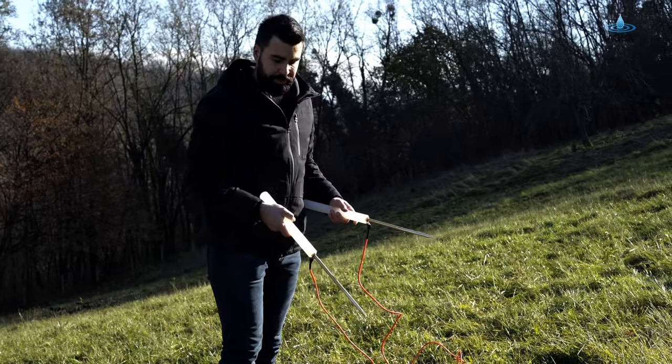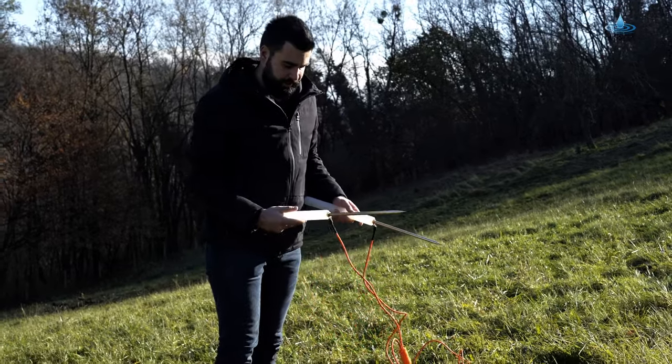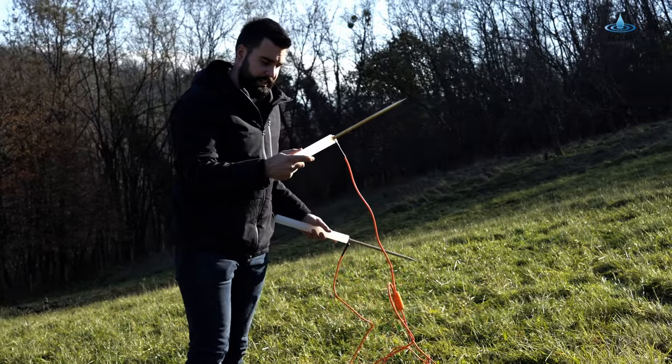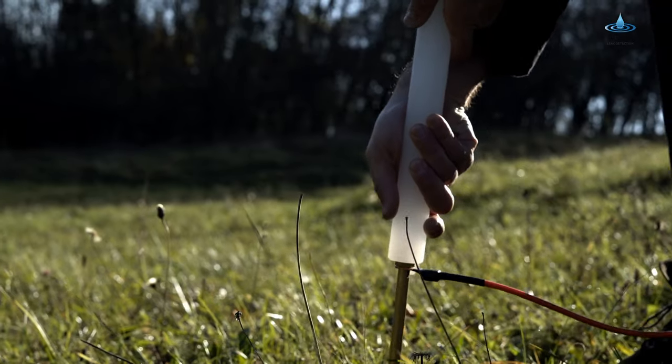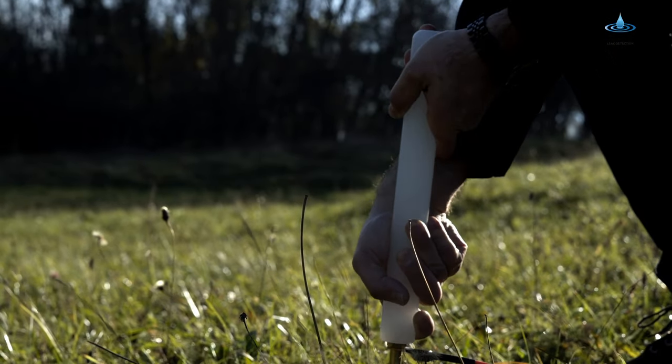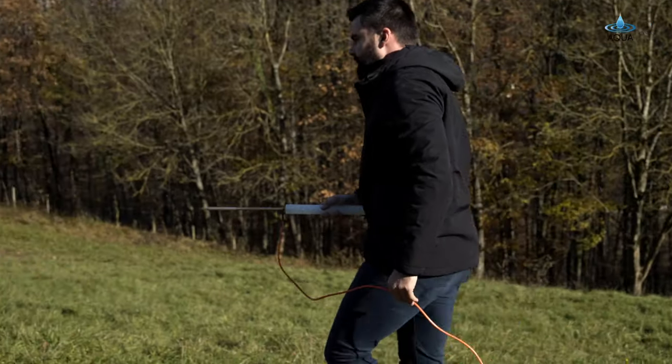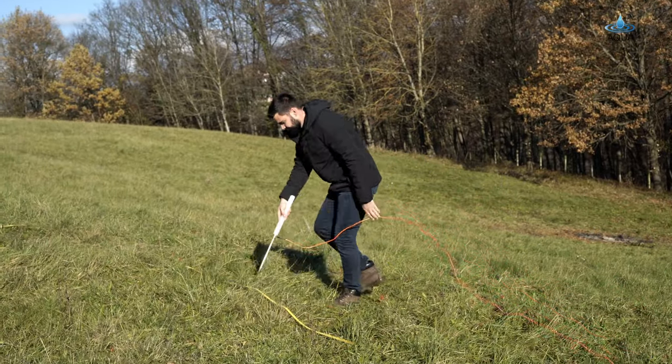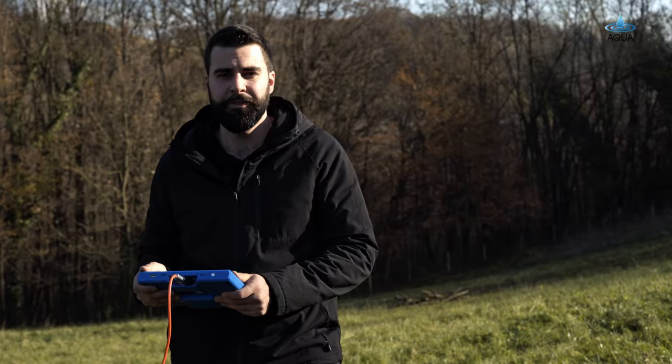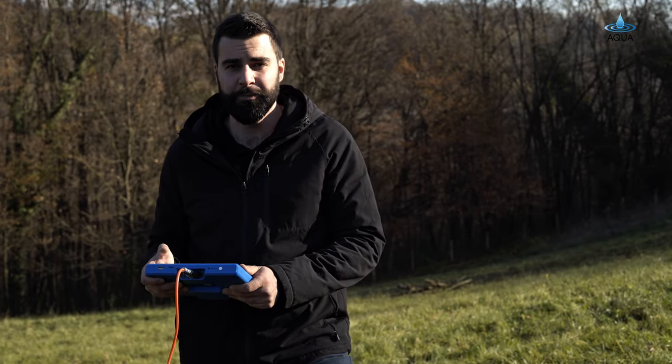Now that you've got everything ready, line test is done, everything's connected, you'll need to insert the rods into the ground. The first one, which is the line with the shortest cable, will need to be pushed into the starting point of the tape measure at zero. The second rod will need to go into the 10 meter mark.